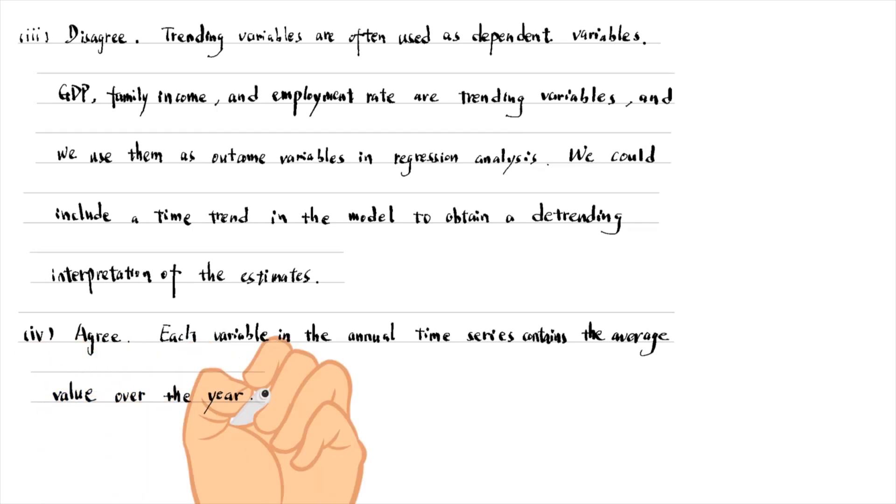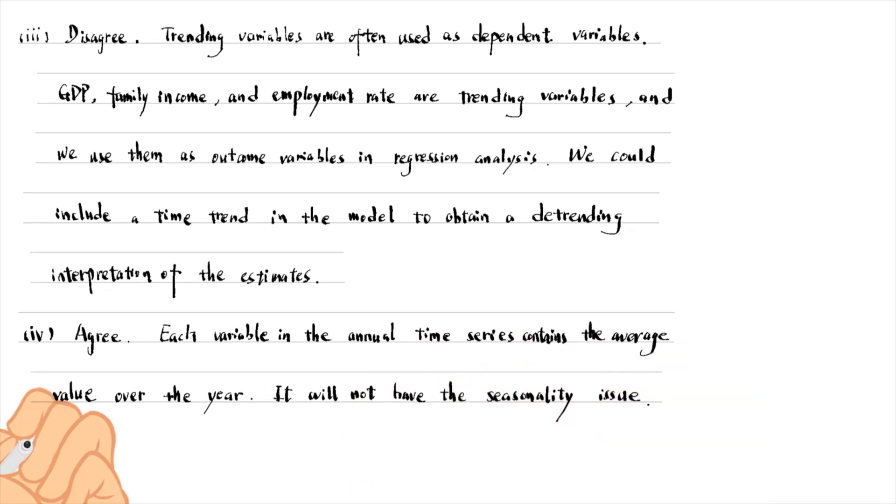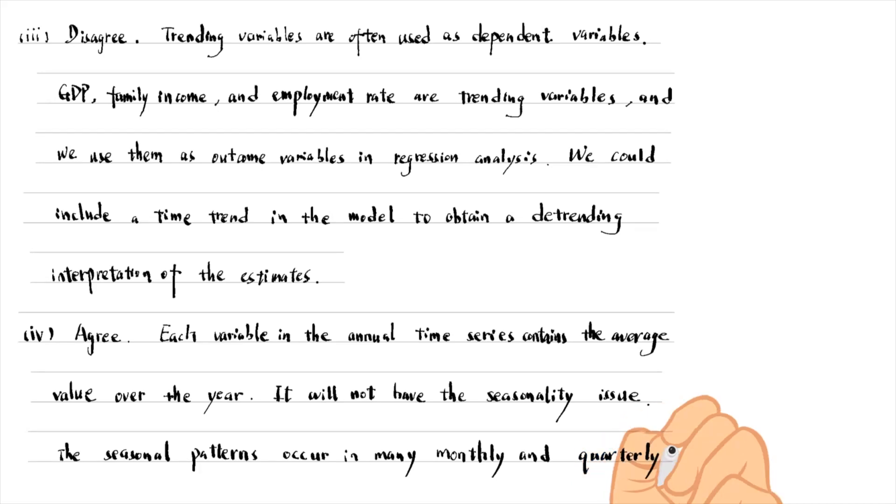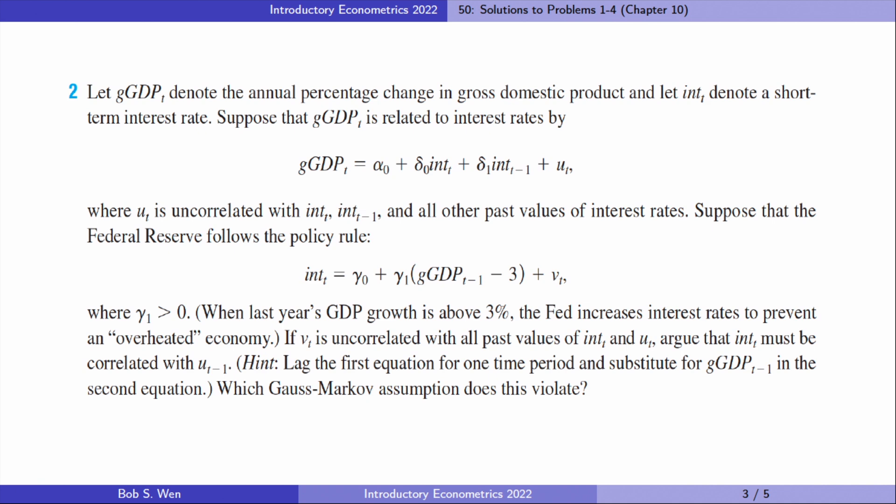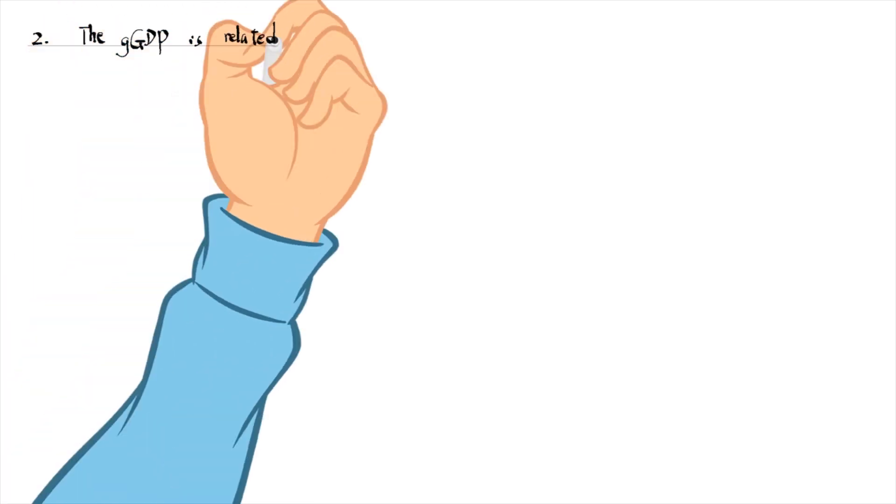It will not have the seasonality issue. The seasonal patterns occur in many monthly and quarterly time series. Let's do problem 2. For the first part, we follow the hint and lag the GDP equation for one time period.